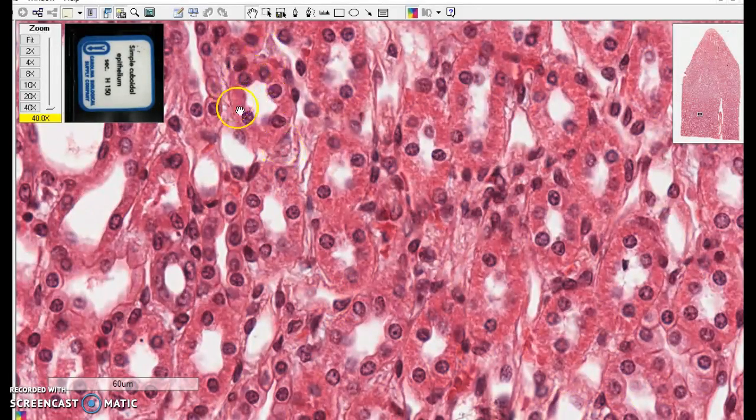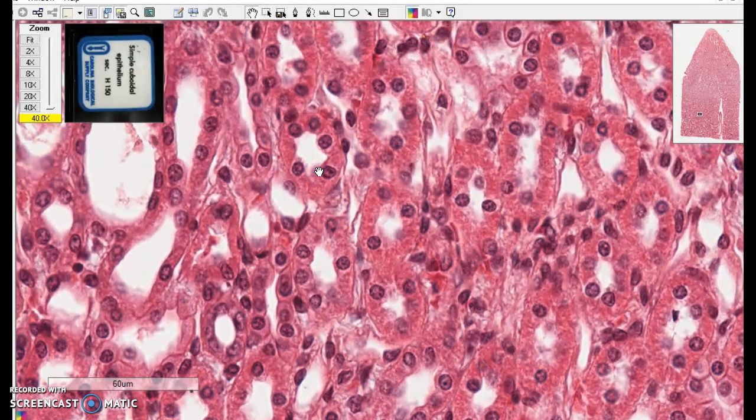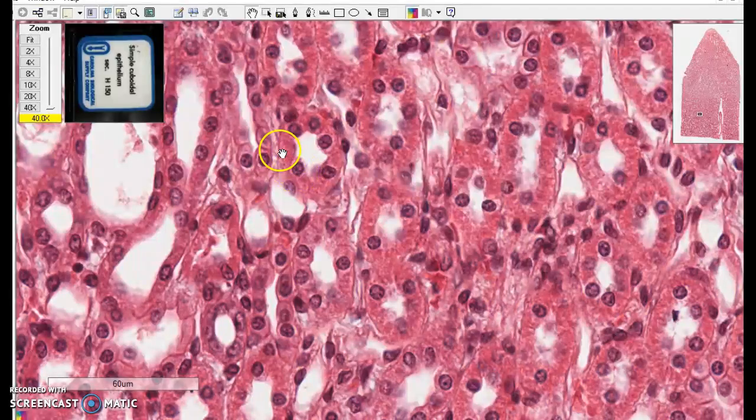Here's one there, here, here, here, here, here. And of course, where you don't see the nucleus, the slice has just gone in a part of the cell, up beneath or above the nucleus.